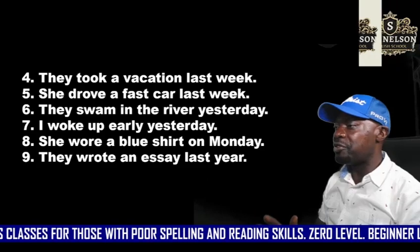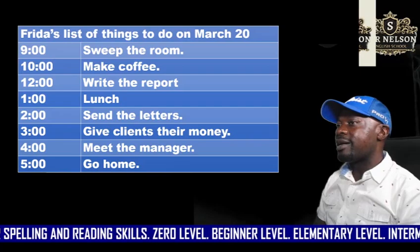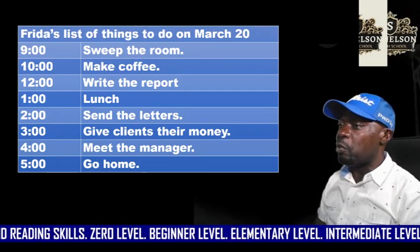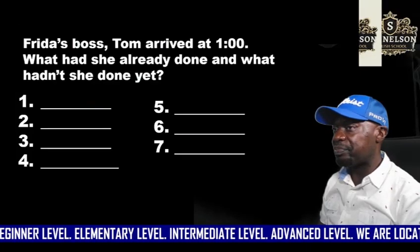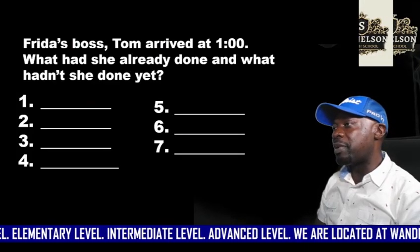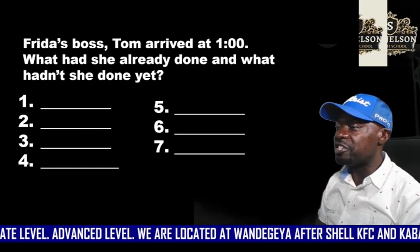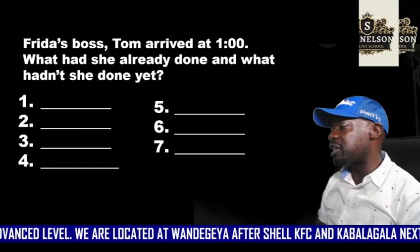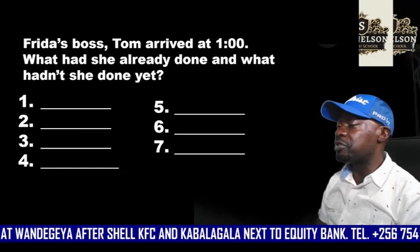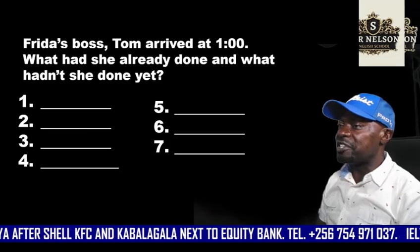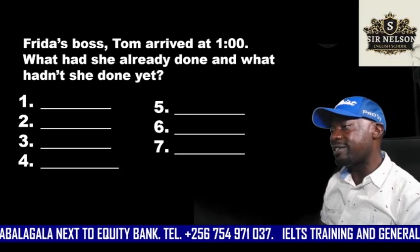Follow the example and you try this. Study this table very well because we are going to use it to practice our past perfect. Frida's boss Tom arrived at one. What had she already done and what hadn't she done yet? The word 'yet' is used with a negative; 'already' is used with a positive. Practice the past perfect by answering these questions.